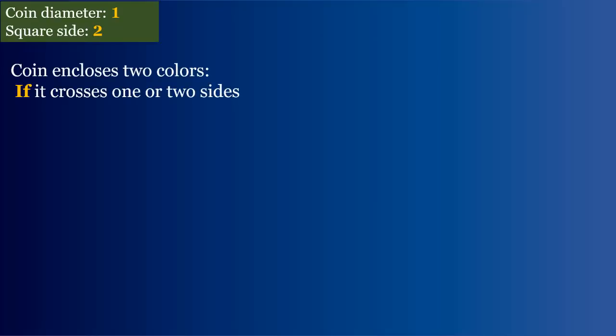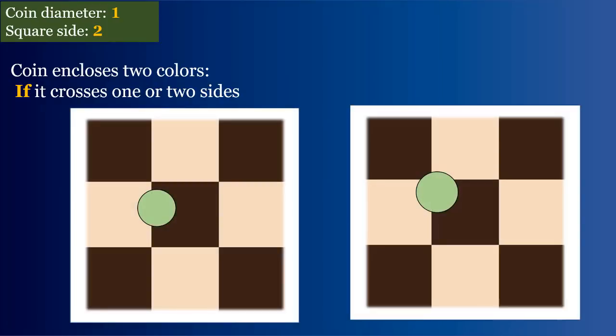The coin would enclose both black and white colors if it lands in a position that it crosses one or two sides of a square as shown here.